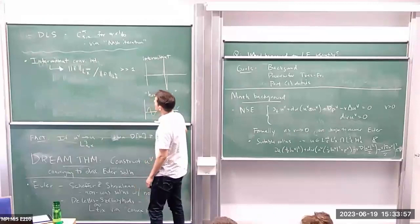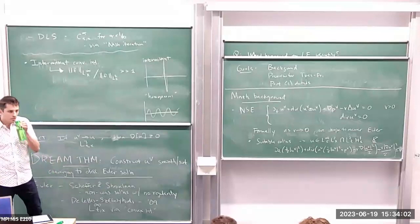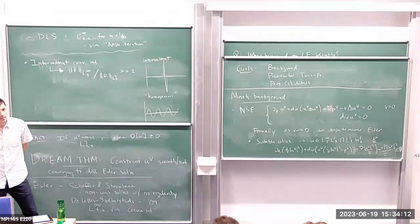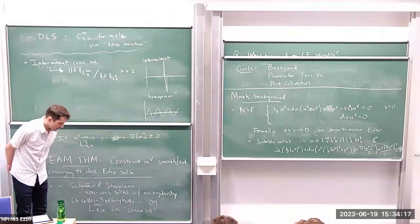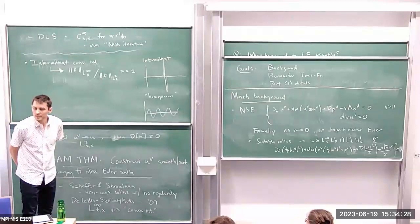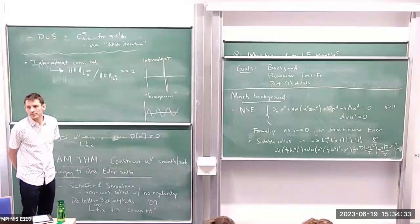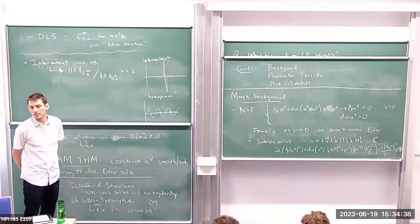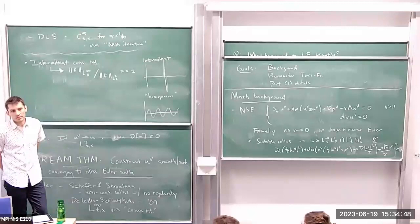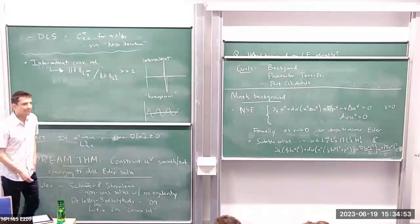Question: what is the weak-strong uniqueness class for the Euler equation? So if we have smooth initial data and a smooth solution, and also a dissipative weak solution for the same initial data, do they coincide? The answer is yes for the weak solution in L^∞_t L²_x (L² in space, L^∞ in time) and the strong solution in L^∞. This is weak-strong uniqueness for Euler.